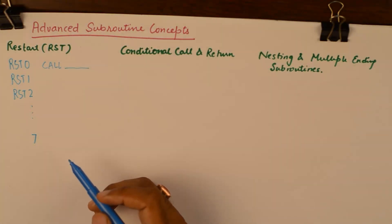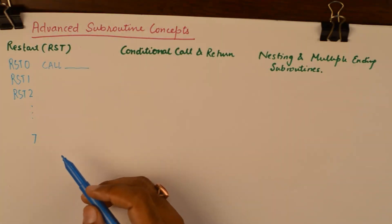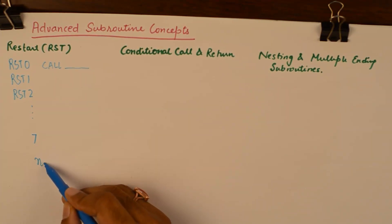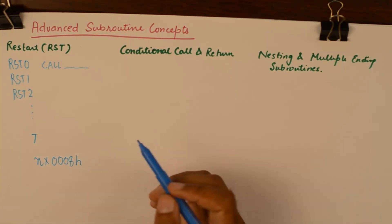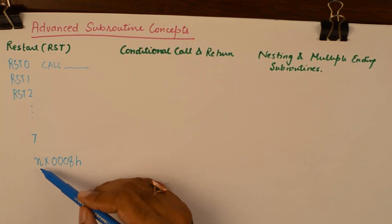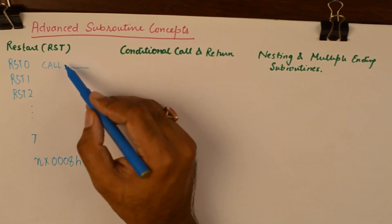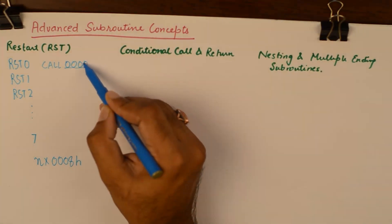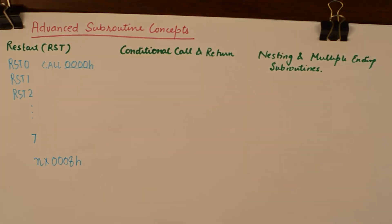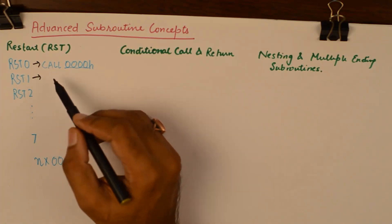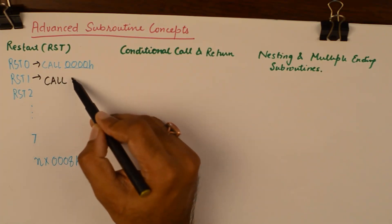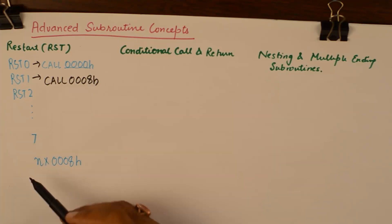The vector address of restart instructions is calculated by n times 0008h. So in the case of RST 0, n will be 0, giving an address of 0000h. Calculating the address of RST 1: RST 1 is equal to call 0008h.